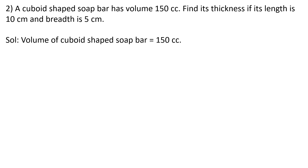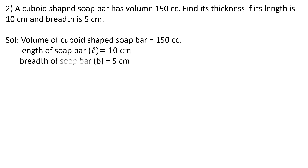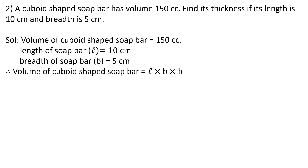Solution: Volume of the cuboid-shaped soap bar = 150 cubic centimetres. Length l = 10 cm, breadth b = 5 cm. Using the formula: volume = l × b × h, substituting gives 150 = 10 × 5 × h. Keeping h on one side, 10 × 5 goes to the denominator, so h = 150 ÷ (10 × 5).